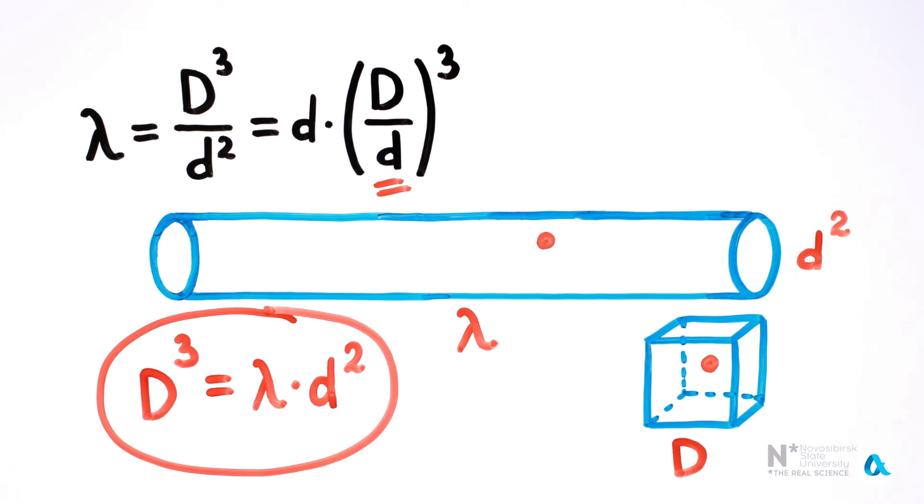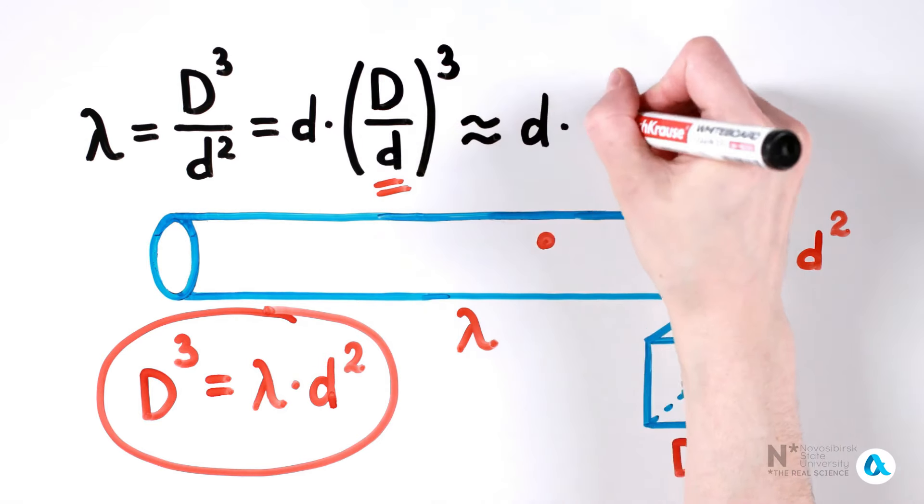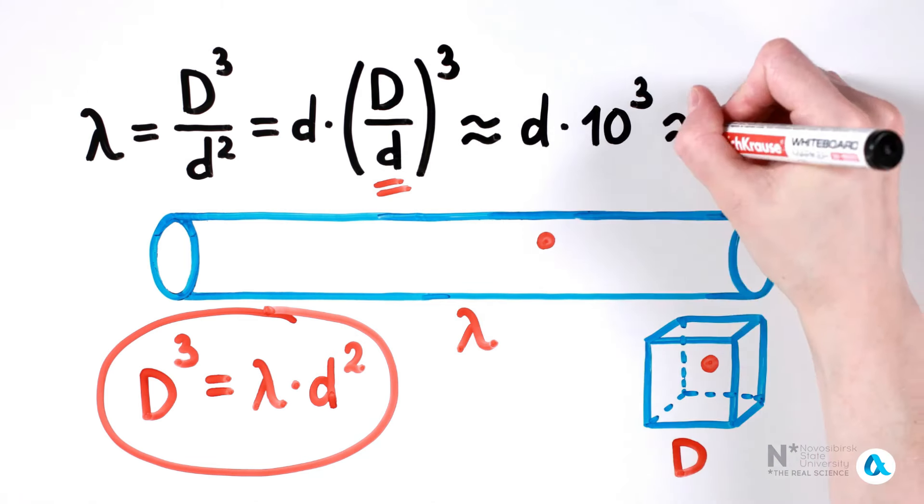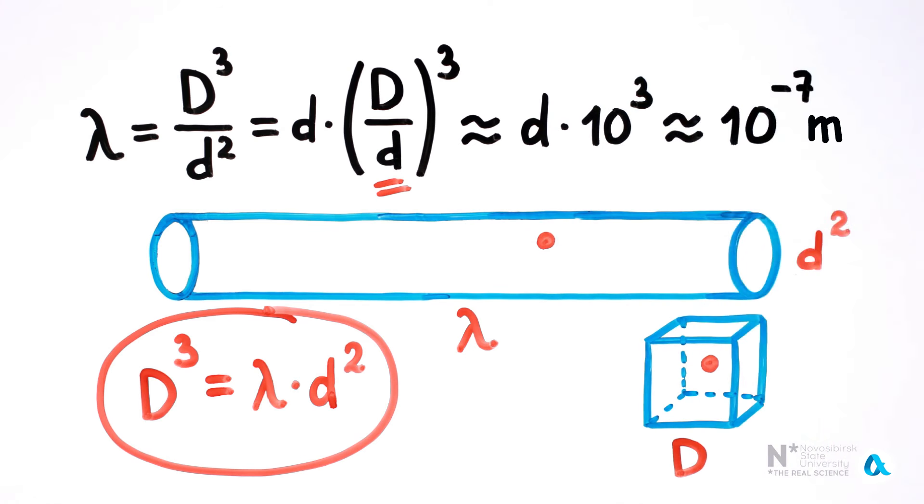In liquefied air, the molecules are packed closely together. At the same time, its volume decreases by approximately a thousand times compared to its gaseous state. Therefore, the mean free path is approximately one thousand times the size of the molecule. The size of the molecule is approximately 10^-10 meters. So, the mean free path is about 10^-7 meters or 0.1 microns.